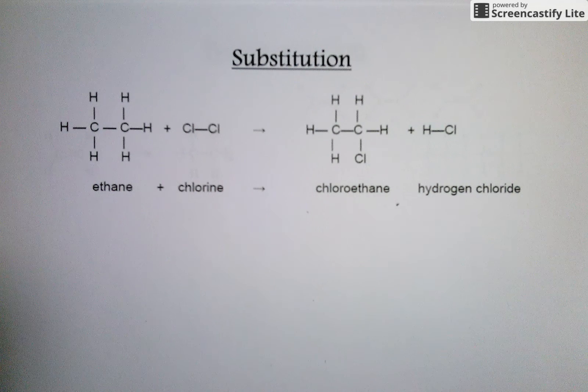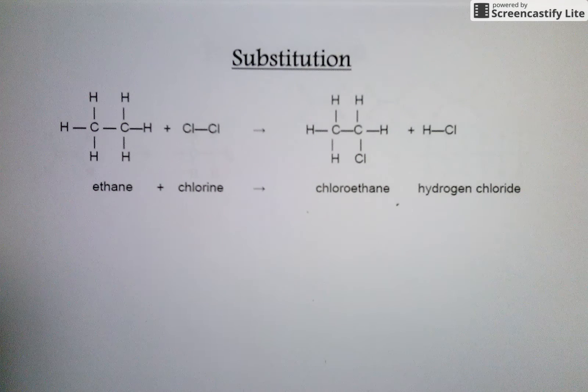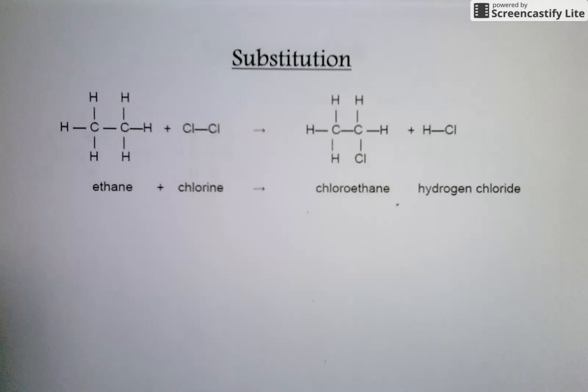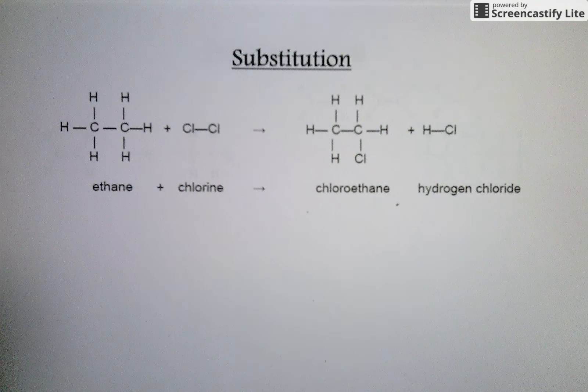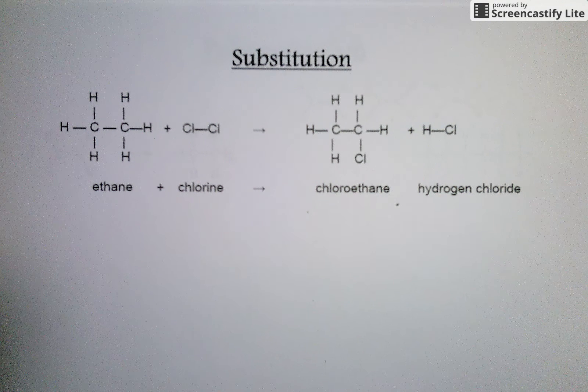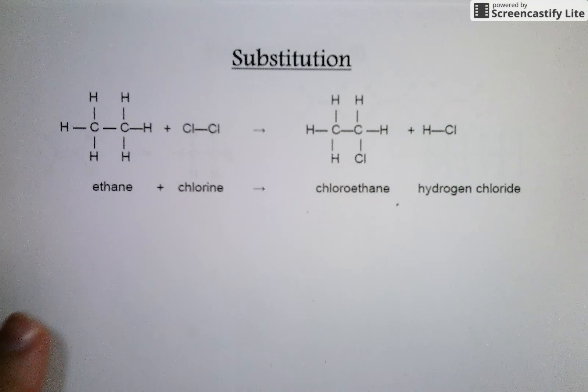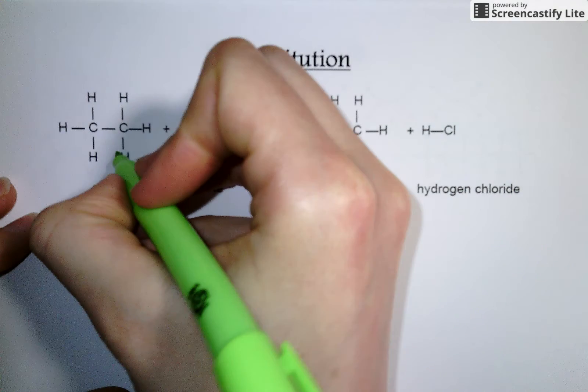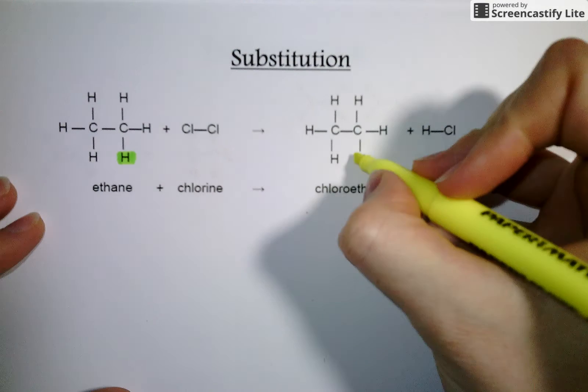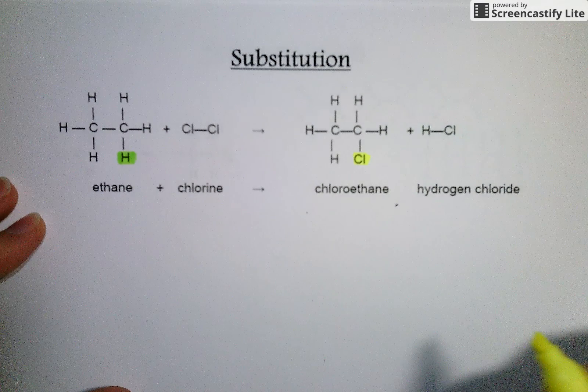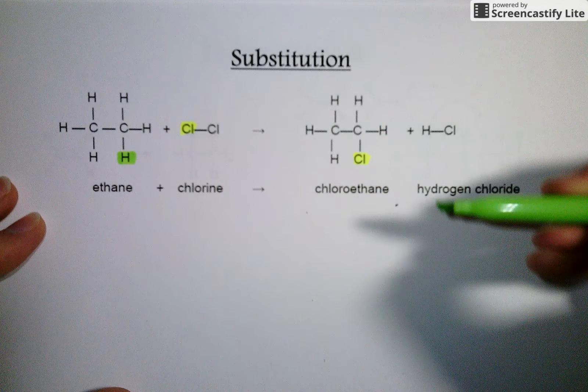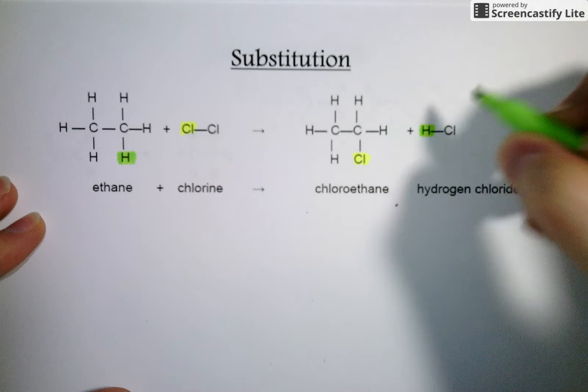We're going to start with the reaction type of substitution. Just like if I'm ever out of class, a substitute teacher comes in and takes my place, that's the key idea here for the substitution reaction itself. What you see in this example reaction is that the hydrogen of a molecule of ethane, one of them, gets substituted with an atom of chlorine. And that atom of chlorine came from one of the reactants, and you can see in the products that that hydrogen and chlorine just swapped places.